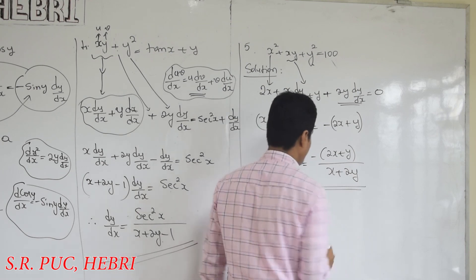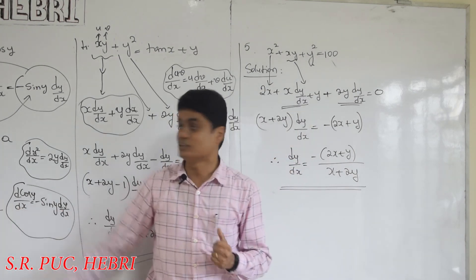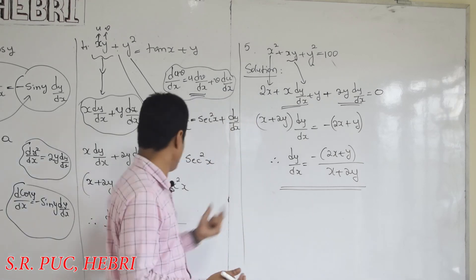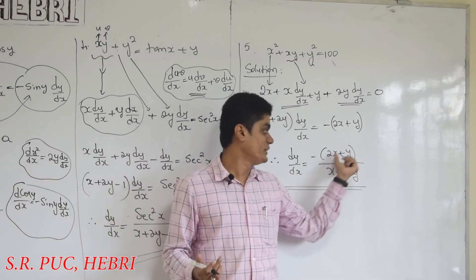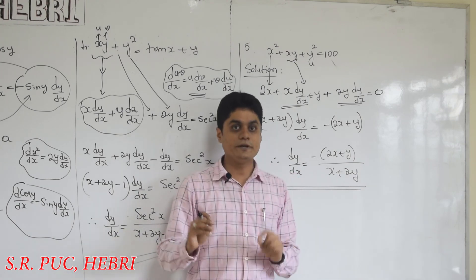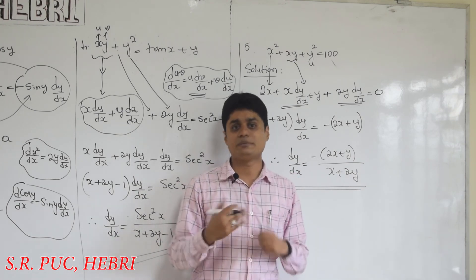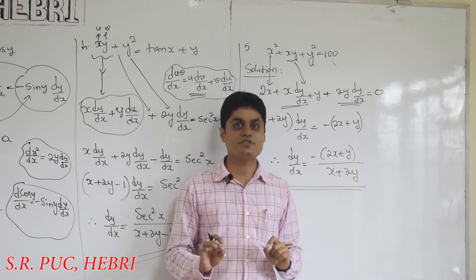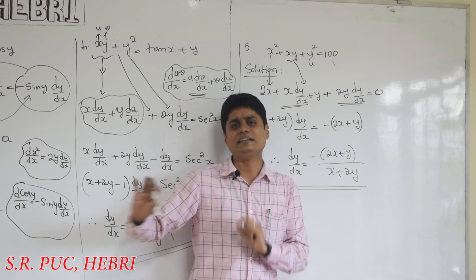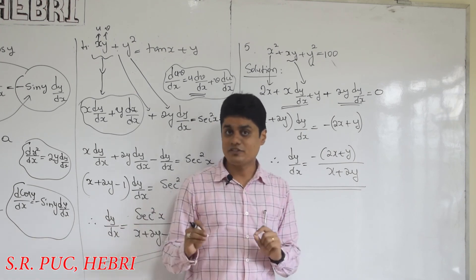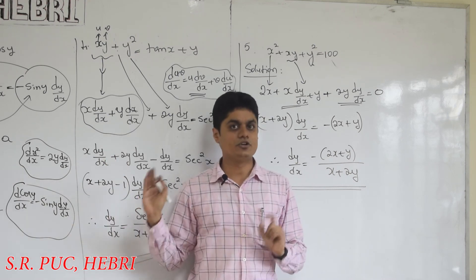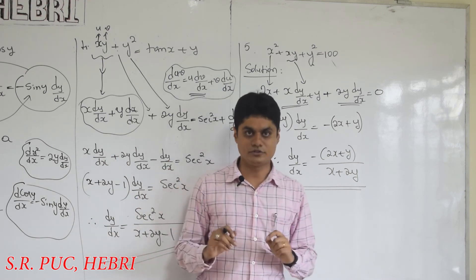In the last two questions you can see both variables present in the final answer — 2x + y in the numerator and x + 2y in the denominator. Remember: if dy/dx contains both variables, you have 100% differentiated an implicit function. Two more problems remain, which I will continue. I hope you understood.